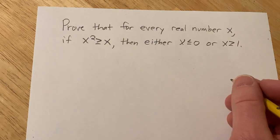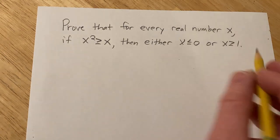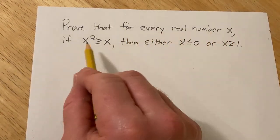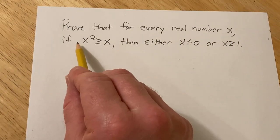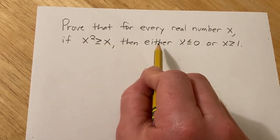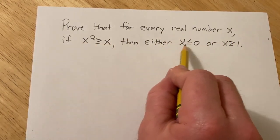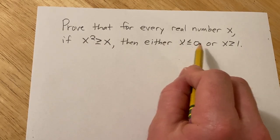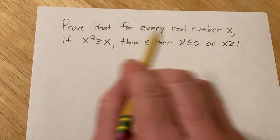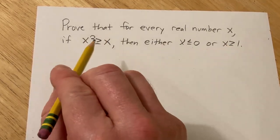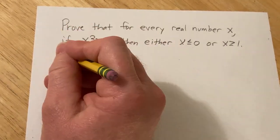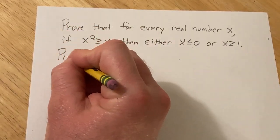Hello, in this problem we're going to do a proof. Prove that for every real number x, if x squared is greater than or equal to x, then x is less than or equal to 0, or x is greater than or equal to 1. So one of these must be true. Let's go ahead and go through the proof.